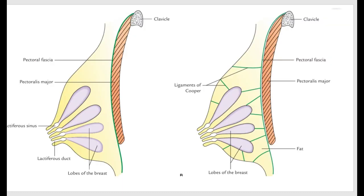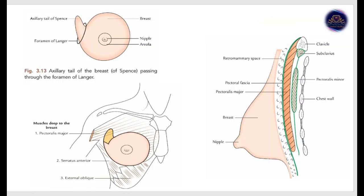For understanding purposes, looking at the diagram: this is the breast, this part is known as the nipple, and this part is known as the skin. Skin consists of the nipple and areola. Areola is the structure around the nipple.